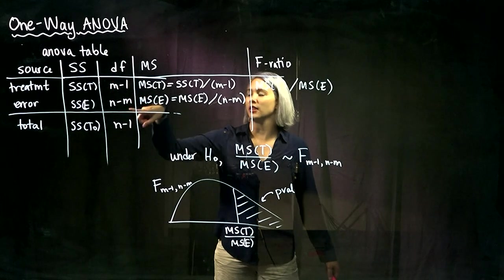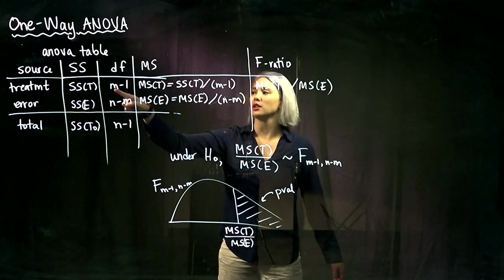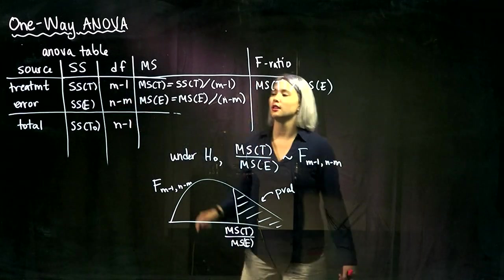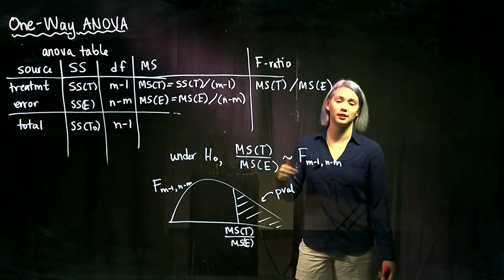So then in the next column, have our degrees of freedom. So this is the number of populations, or number of groups, minus one, and then this is the overall sample size minus the number of groups.